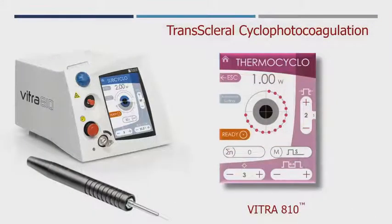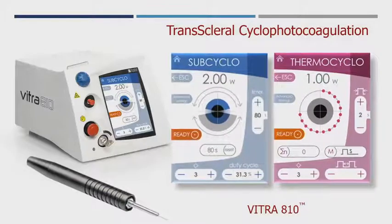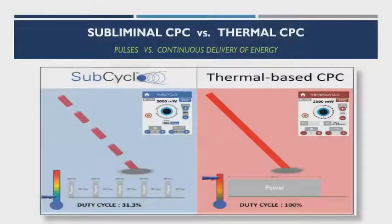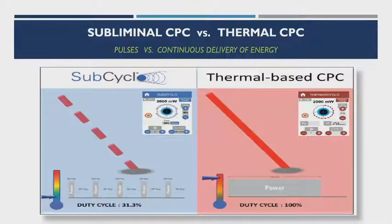Now we have another way to do cyclophotocoagulation: SubCyclo, standing for subliminal transcleral cyclophotocoagulation. We have two technologies in one device. The laser beam is fractionated into very short shots, and between these shots there are gaps during which the tissue has enough time to cool down — the so-called thermal relaxation time — so there is no heating or destruction of tissue. In contrast, traditional thermal CPC delivers energy continuously, 100% going to tissue, which is why it warms up and causes coagulation.